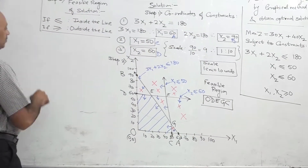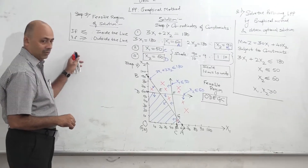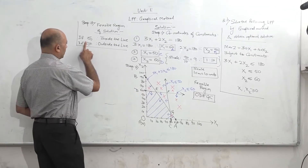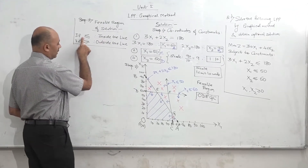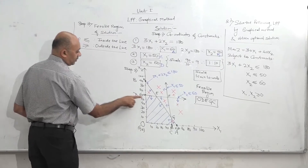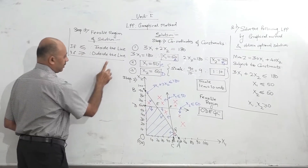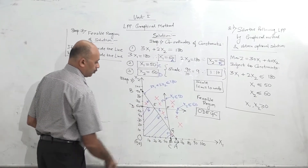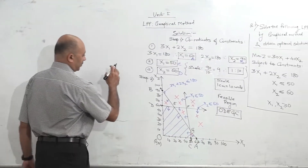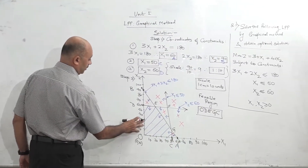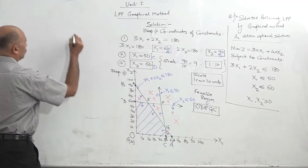This principle is very important — you should always remember this when you are finding the feasible region. If the constraint sign is less than, the region will be inside. If the constraint sign is greater than, the region will go outside. Now step 3 was finding the feasible region. Now we go to step 4.